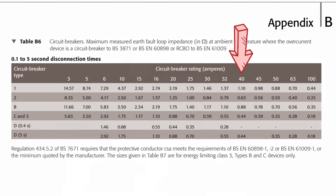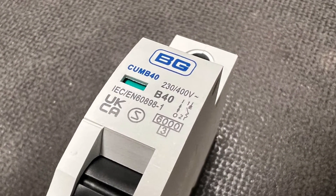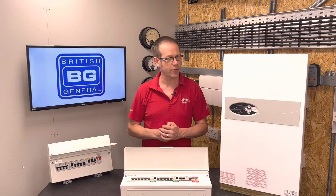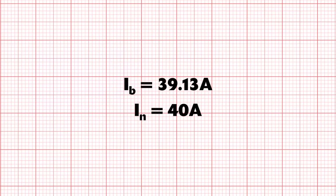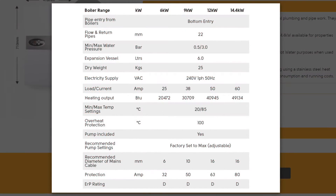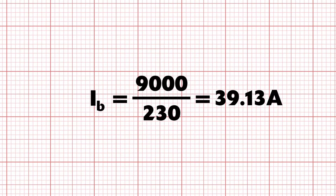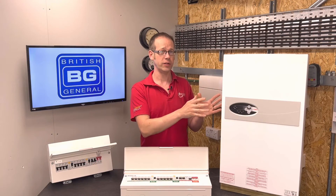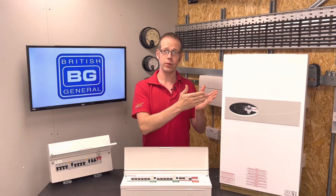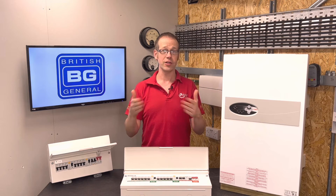At this point we'll go on a quick side quest to discuss an interesting point. You'll notice the design current is very close to the nominal rating of the circuit breaker, which in theory isn't really a problem. However, if you look at the technical data for this boiler, you can see that the recommendation is that it's protected by a 50 amp MCB. Why the suggestion to go up to this larger size? It's because we calculated the design current using the nominal voltage, which is correct — however, because the load is purely resistive, if the real-life voltage is higher than the nominal value it will cause more current to flow, potentially pushing it over 40 amps.